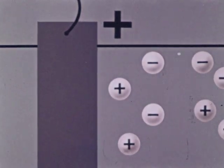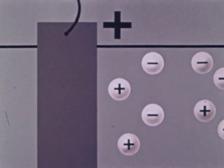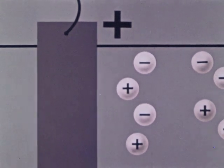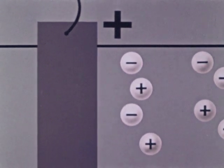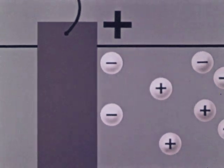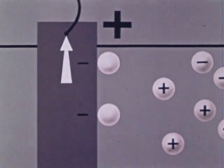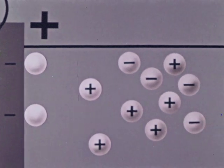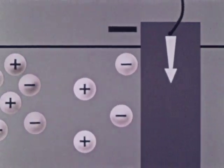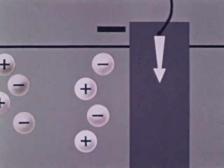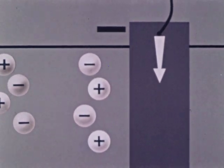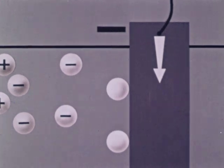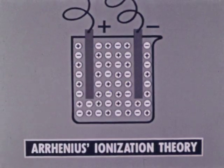Another diagram will illustrate what happens when the current is turned on. Positive ions near the positive electrode will be slightly repelled from it. Negative ions will be attracted to it and will give up their electrons. At the same time, negative ions are being repelled from the negative electrode, and positive ions are being attracted to it. The Arrhenius theory offered one explanation for the behavior of electrolytes: acids, bases, and salts.